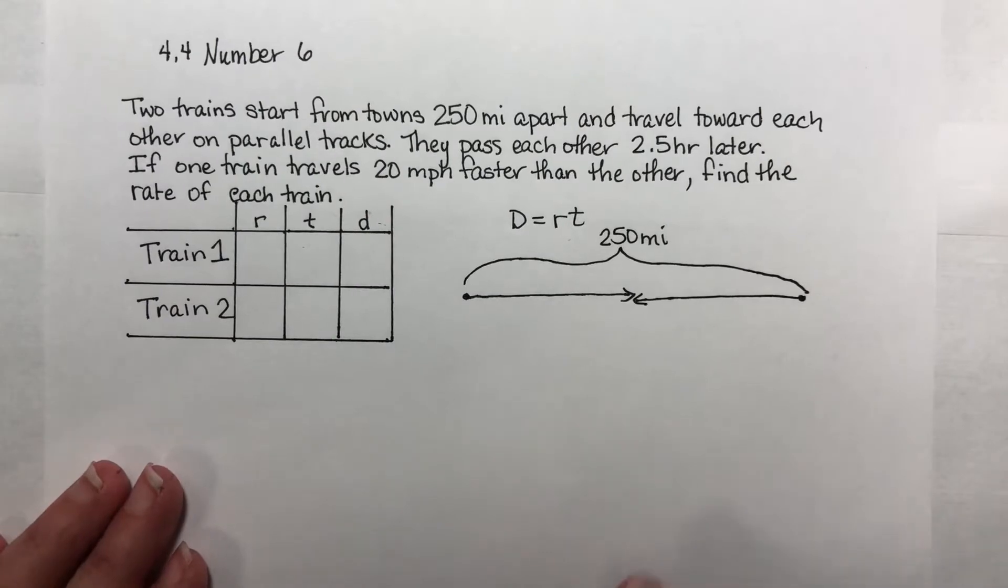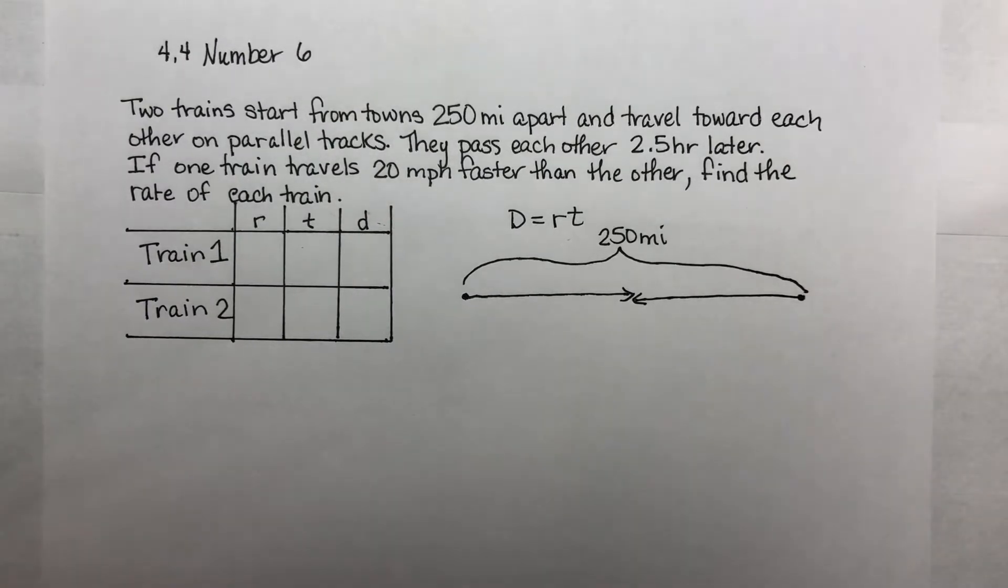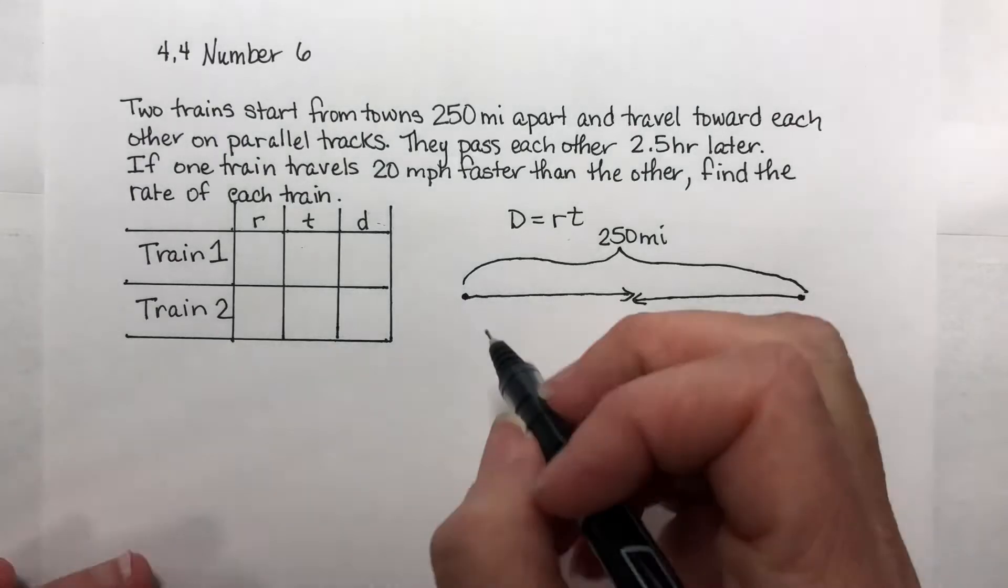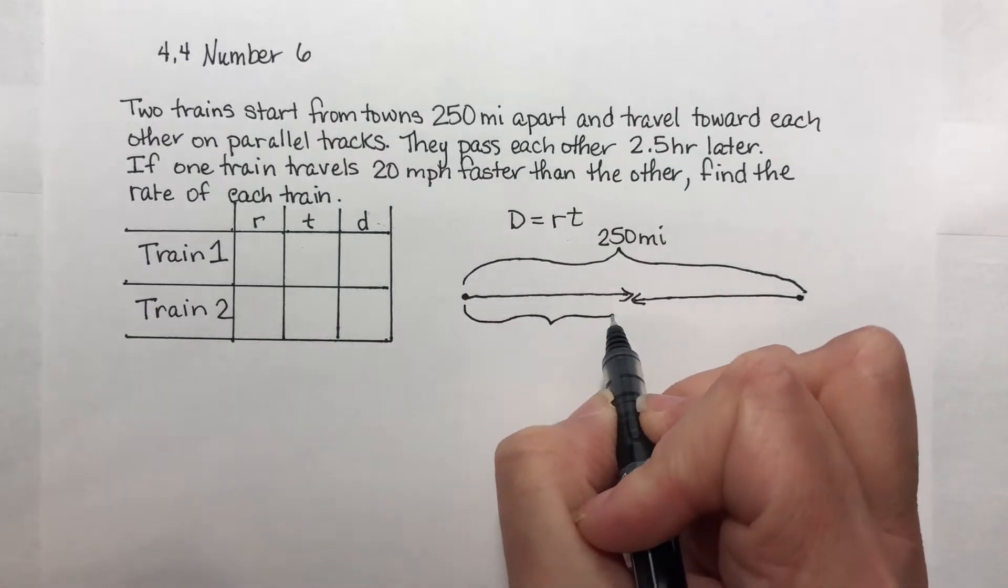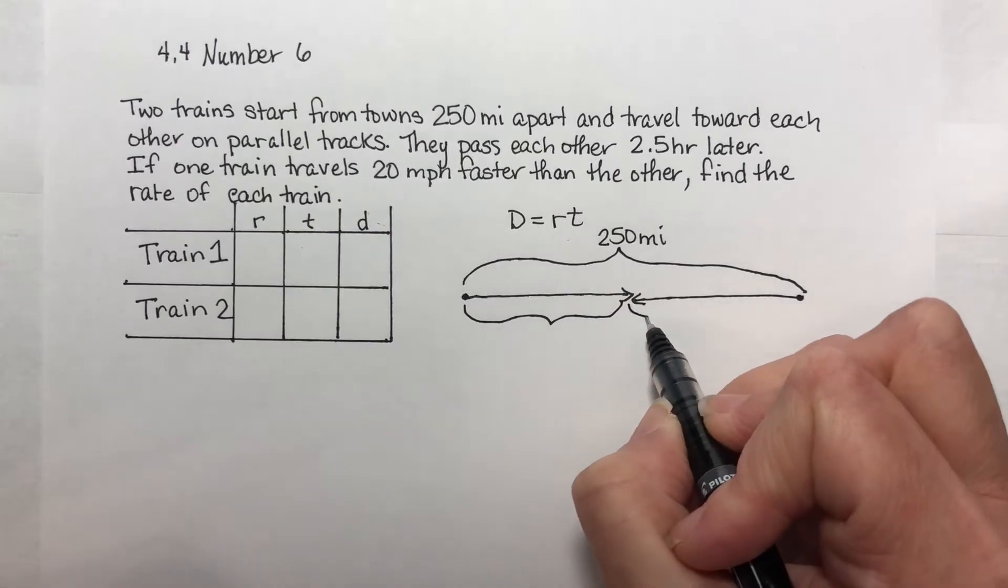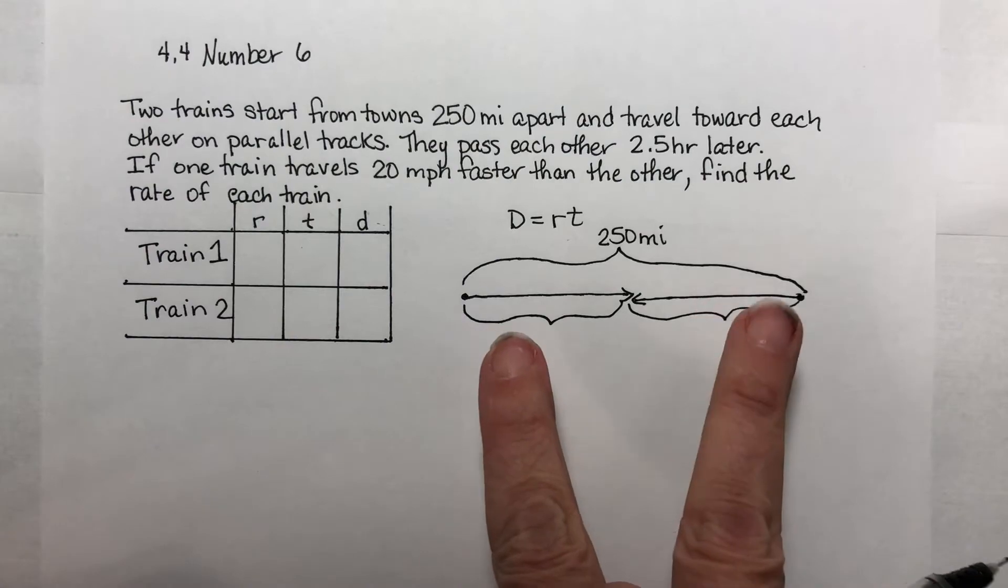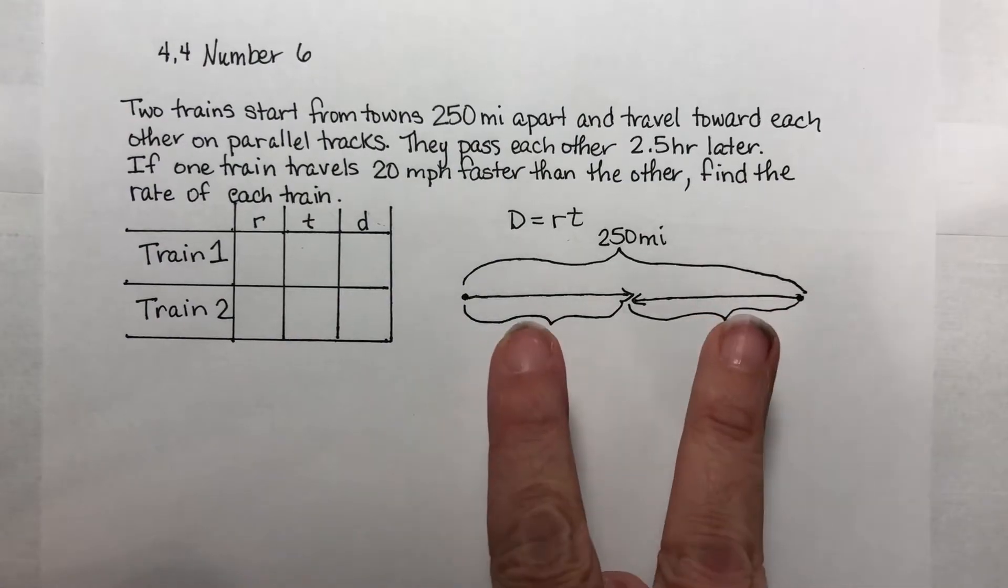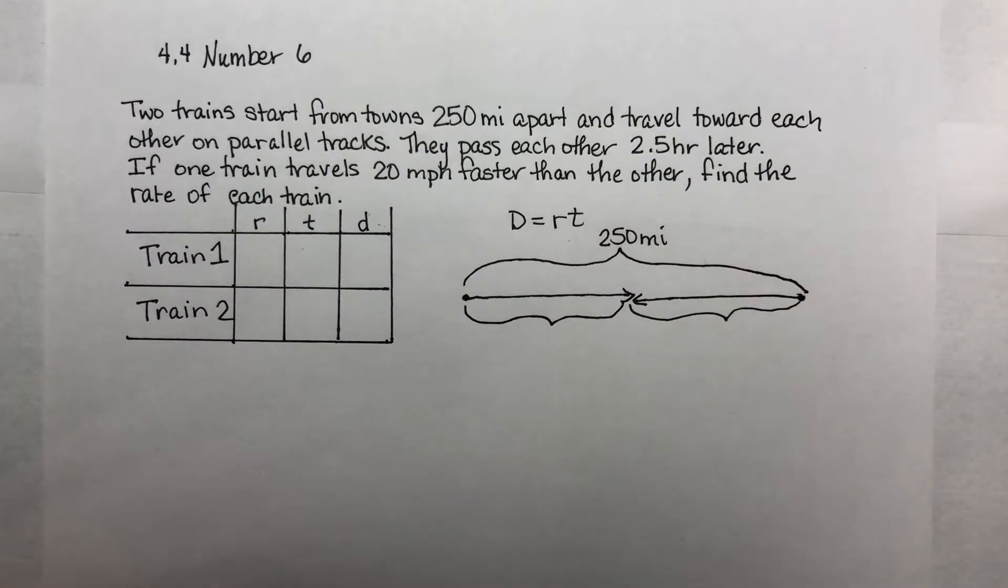Now, for one of my two equations, because although this can be worked using only one variable we're in this section where we're using two, I'm going to find a way of talking about how far this distance is and also how far this distance is. And you can see that if I could have a way of talking about these two, I should be able to add those distances together and get the total distance. So that's my plan for one of my two equations.